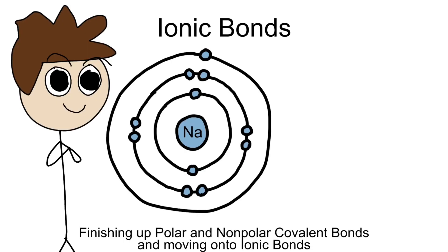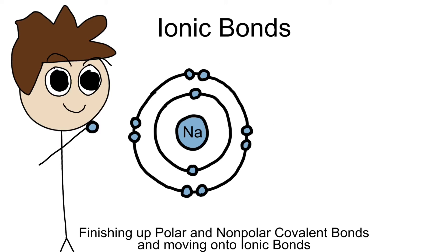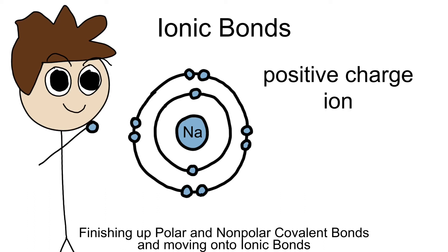If the electron does succeed in leaving the sodium atom, it will result in the sodium having a net fully positive charge, due to now having more protons than electrons. We call this newly charged atom an ion, denoted as Na+. More specifically, since it's positively charged, we call it a cation.